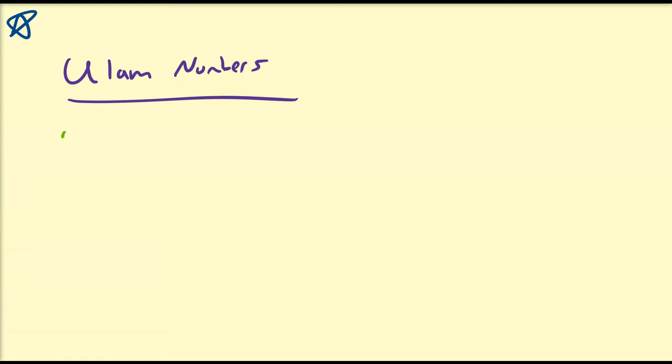So the first two Ulam numbers are going to be U1 is equal to 1 and U2 is equal to 2. And then the description of how you generate the rest of the Ulam numbers is a bit more intricate, but we're going to talk about how it's defined and we're going to work through a few examples on how to calculate Ulam numbers.